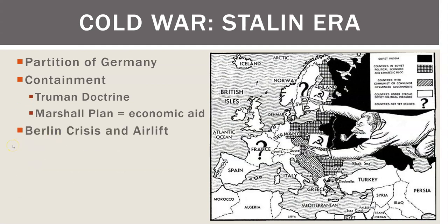The Berlin airlift was decisive decision-making by Truman to keep West Berlin. Stalin tried to get West Berlin without a war by cutting off supplies — a smart move — but he was outfoxed. Western European countries got nervous and set up a defensive alliance headed by the United States called NATO, the North Atlantic Treaty Organization. These countries wanted protection not only by American forces but by American nukes — that is called the U.S. nuclear umbrella.